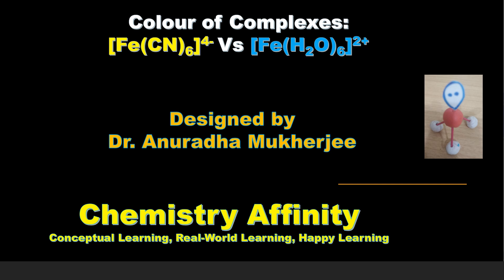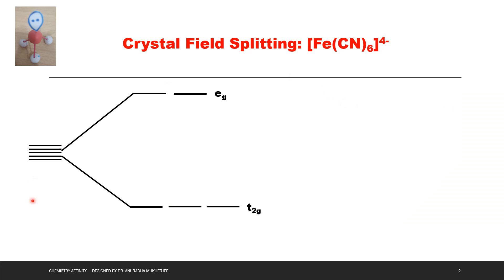Here I am going to explain the color of two different complexes: Fe(CN)6 4- and Fe(H2O)6 2+. First we have to understand the crystal field splitting of these two complexes.